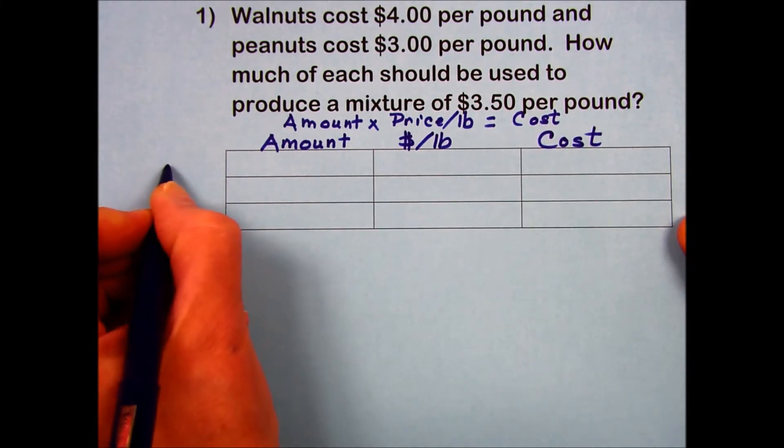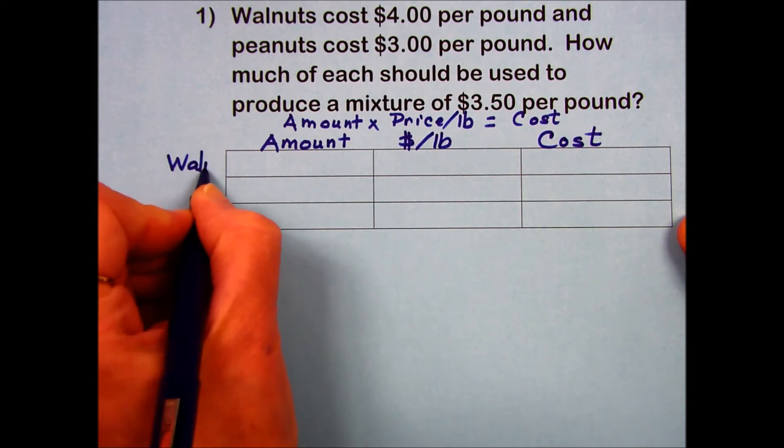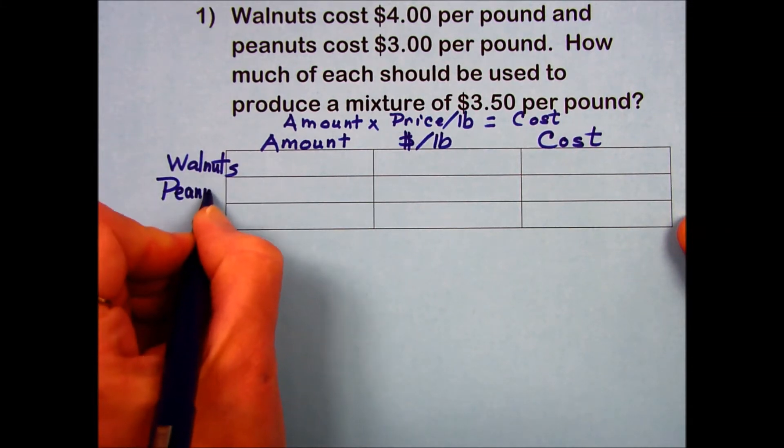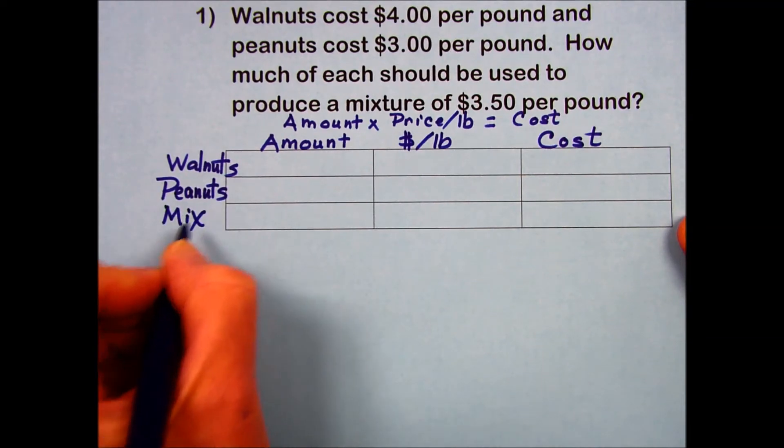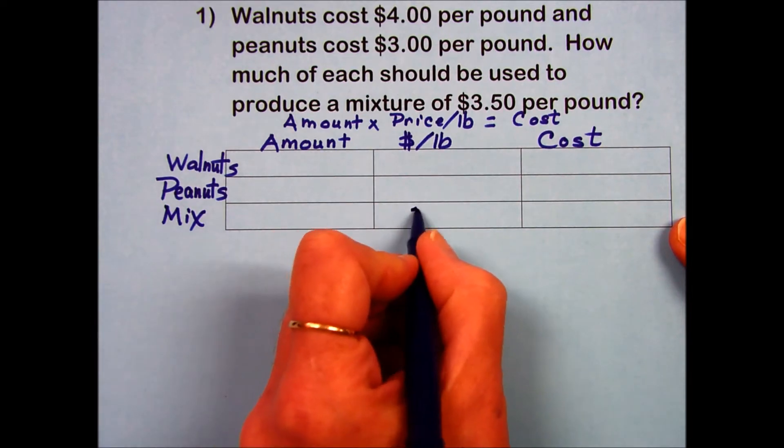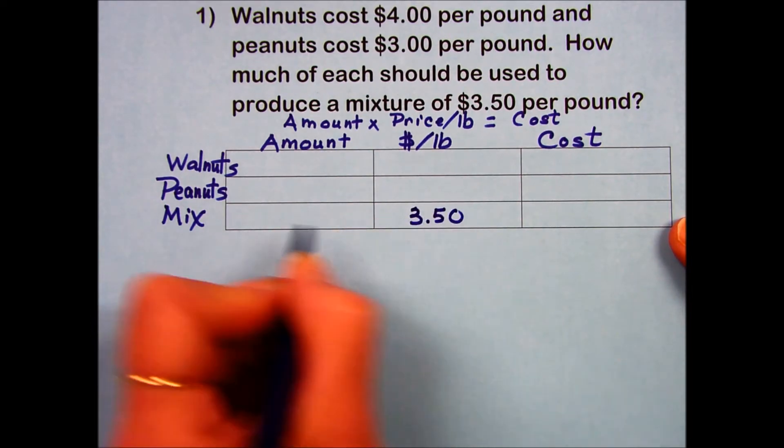So filling in, we've got walnuts, we have peanuts, and we're producing a mixture. I'm going to start with the mixture. It says to produce a mixture that costs $3.50 per pound, so I'll put my $3.50 per pound here.